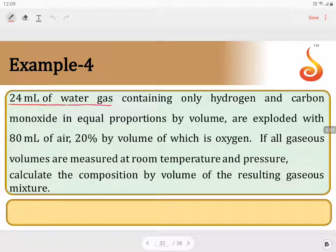Example 4. 24 mL of water gas containing only hydrogen and carbon monoxide in equal proportions by volume. So CO and H2 are in 1:1 ratio, equal proportions, taken 24 mL.